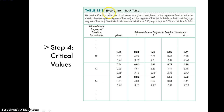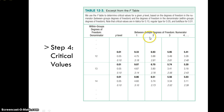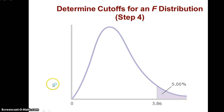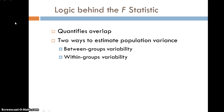We have a new F-distribution table in your appendix. It shows within-groups degrees of freedom in the denominator and between-groups degrees of freedom in the numerator. For example, with 2 degrees of freedom between and 13 within, at alpha = 0.05, the critical value would be 3.80. Because the F-distribution is squared, it only has a single tail — all 5% goes in one tail.